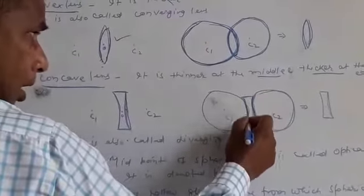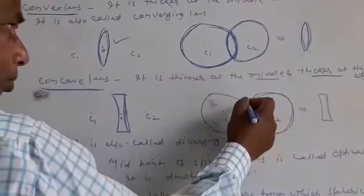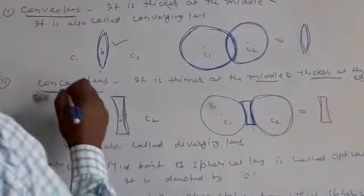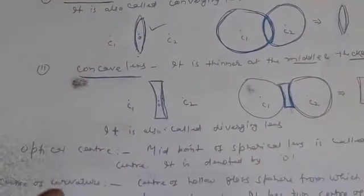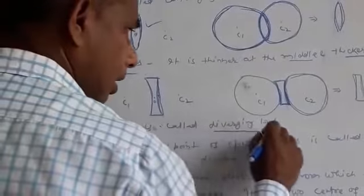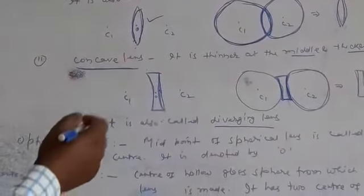Two surfaces are cut out and joined in this manner such that there is no gap, no blank space. It becomes a solid material. So this is concave lens. It is also called diverging lens because it diverges the light rays that fall on it.